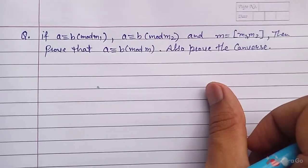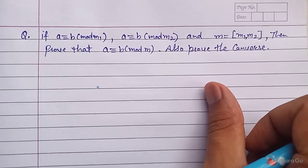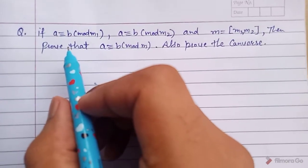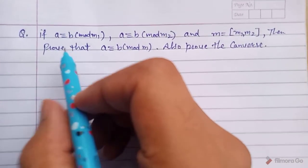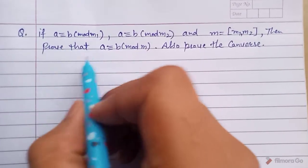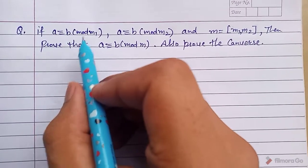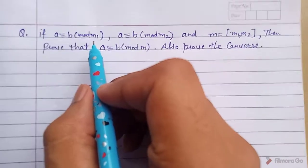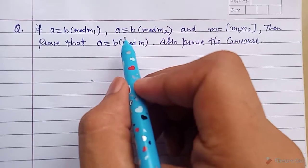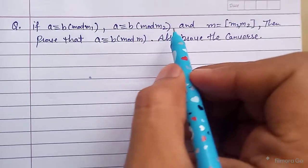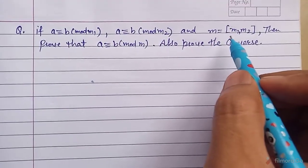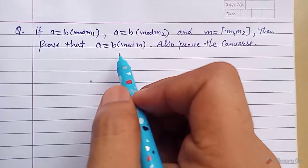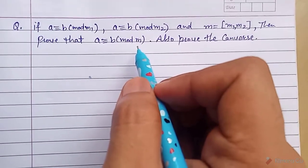Hello students, this is our new video in number theory. This question is based on congruence. First we will prove this theorem: if a ≡ b (mod m1) and a ≡ b (mod m2), and m is the LCM of m1 and m2, then prove that a ≡ b (mod m).